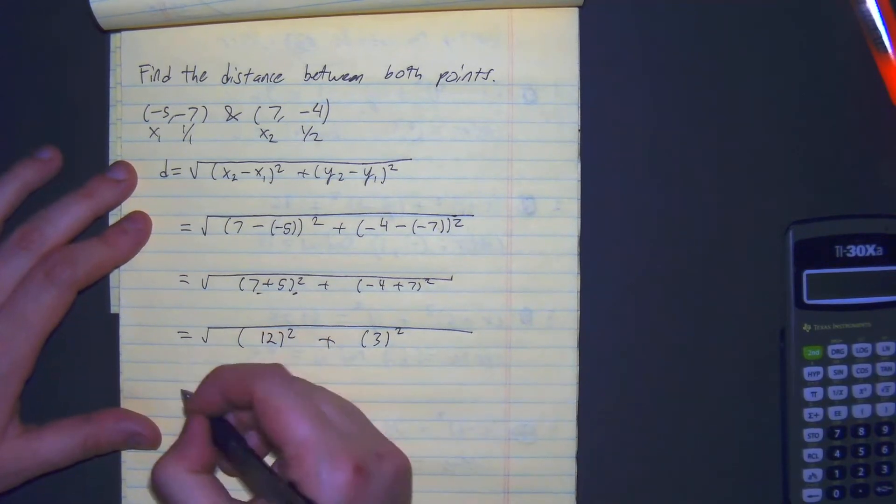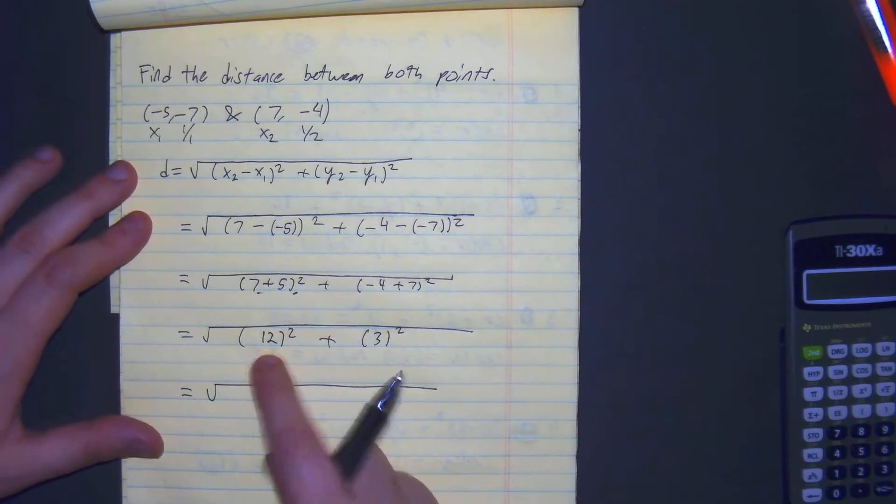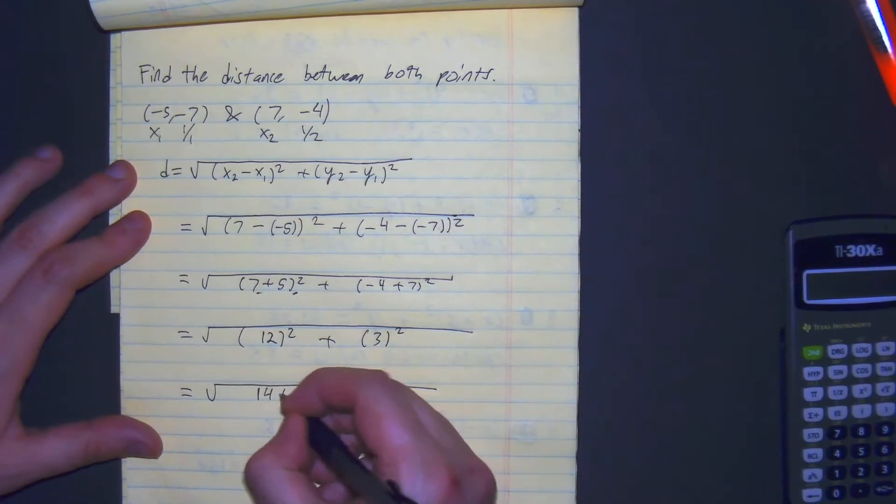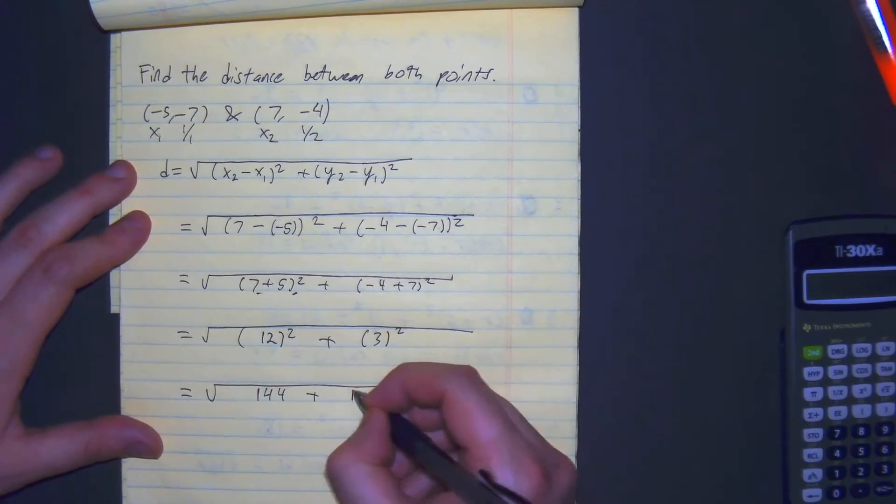From here, we have 12 squared, 144. 3 times 3 is 9.